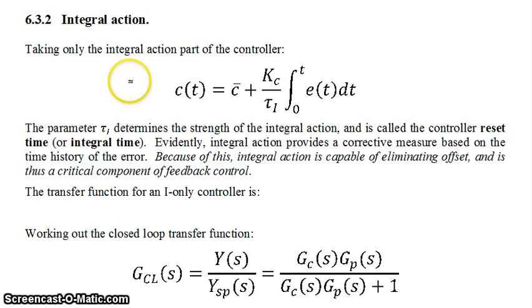In this screencast, we're going to be looking at how adding integral action as a negative feedback loop will affect your system. Now remember, what we're doing right now is we're assuming that our process is first order, so the process transfer function will look like this, and that we're also ignoring the dynamics of the actuator and the sensor.